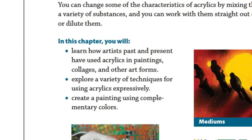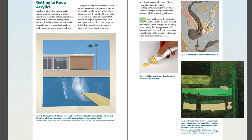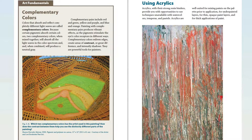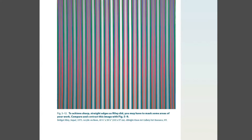Three details from artworks included in the chapter are also shown. As you turn the pages, you'll notice large images of dynamic artwork and clear, informative process photographs. Every chapter includes a section about art fundamentals that highlights an important concept, element of art, or principle of design. A fine art example demonstrates the featured concept. Every work of fine art includes a caption designed to encourage students to look closely, think critically, and compare and contrast.